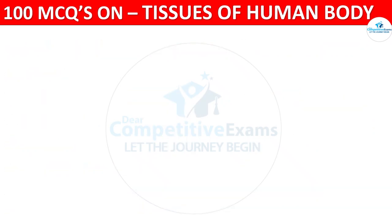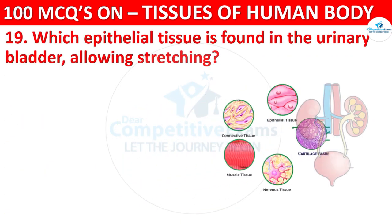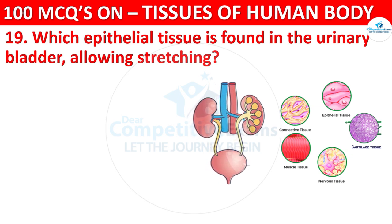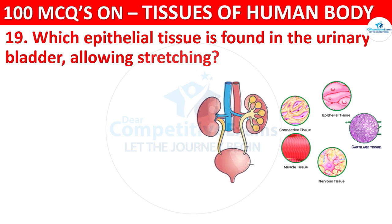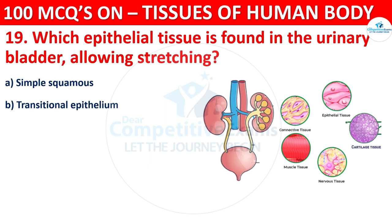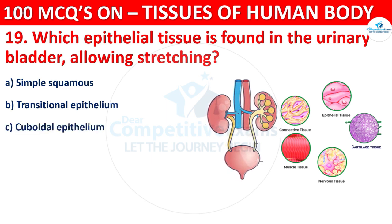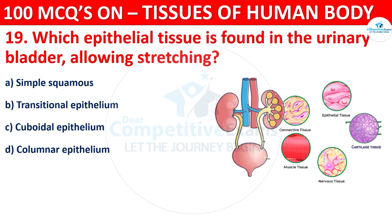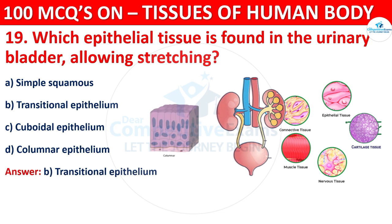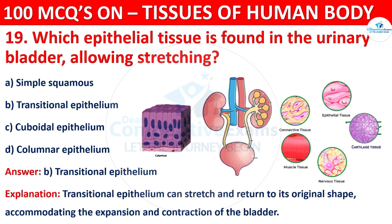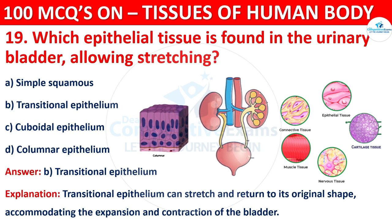Question number nineteen: which epithelial tissue is found in the urinary bladder, allowing stretching? Options are simple squamous, transitional epithelium, cuboidal epithelium, or columnar epithelium. The correct answer is B, that is transitional epithelium. Transitional epithelium can stretch and return to its original shape, accommodating the expansion and contraction of the bladder.